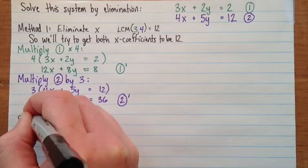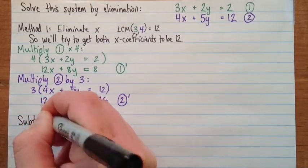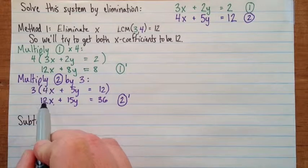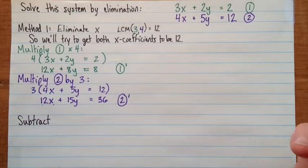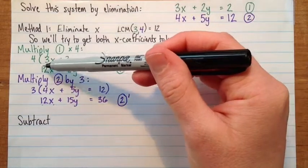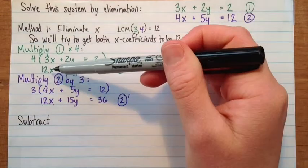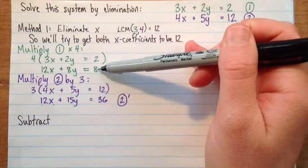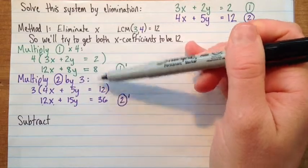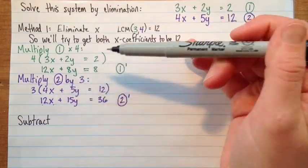So if we subtract... Basically, if the variable that you're trying to eliminate, if they have the same sign in both, then you subtract. If they have different signs, you add. Now, either one will work. But if I look ahead a little bit, I see that if I do 1 prime minus 2 prime, I'll have the 0x, and then I'll have a negative number of y's, and a negative number for the constant term. But if I do it the other way, both will be positive.